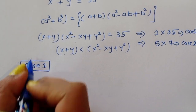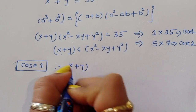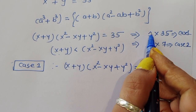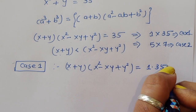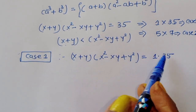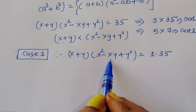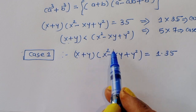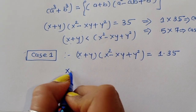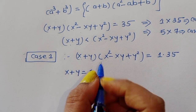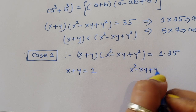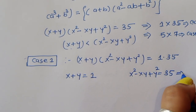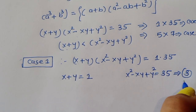Case 1: (x + y)(x² − xy + y²) = 1 × 35. So x + y = 1 and x² − xy + y² = 35. We label x + y = 1 as our first equation and x² − xy + y² = 35 as equation 3.